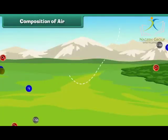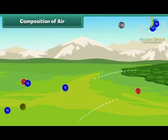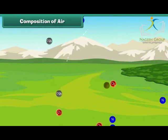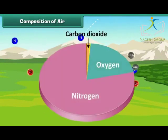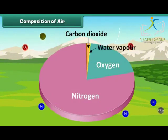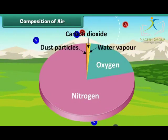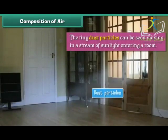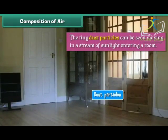Composition of Air: Air is made up of several gases, the most important being nitrogen, oxygen, and carbon dioxide. Air also contains water vapor and dust particles. The tiny dust particles can be seen moving in a stream of sunlight entering a room.